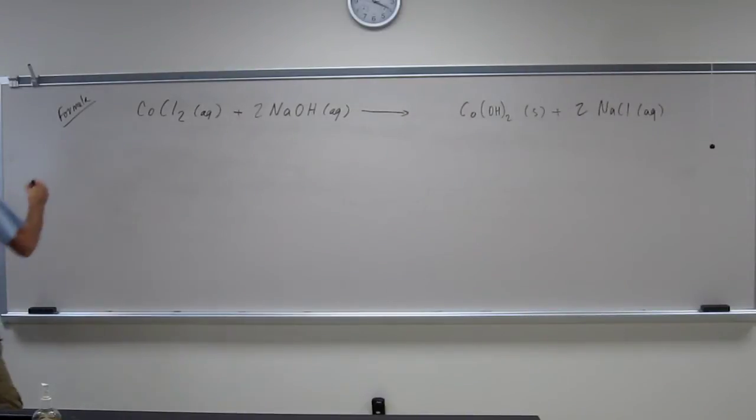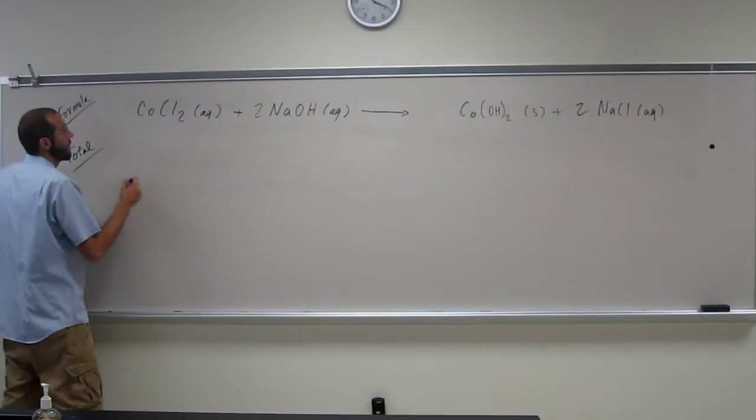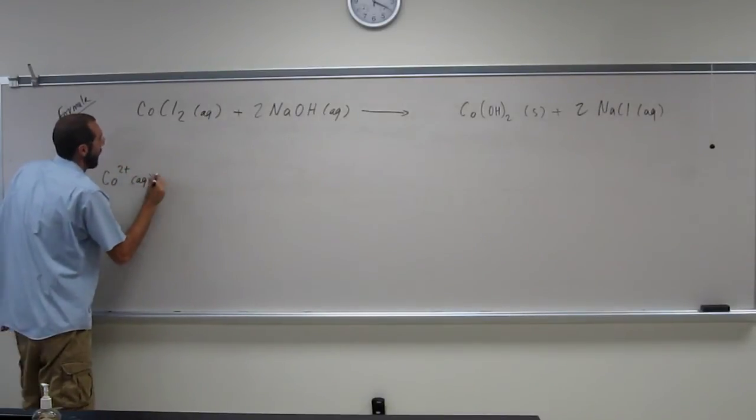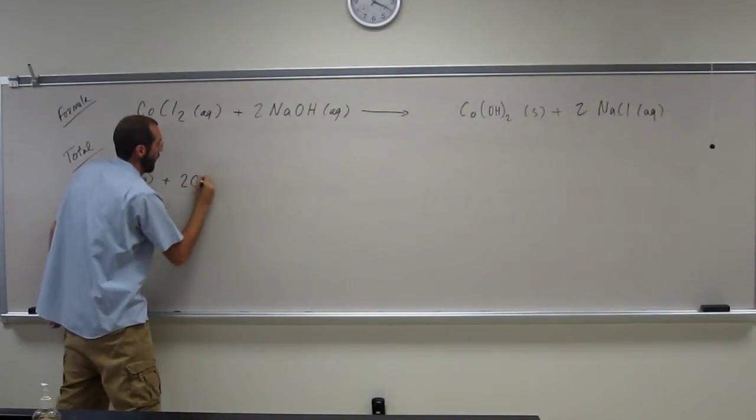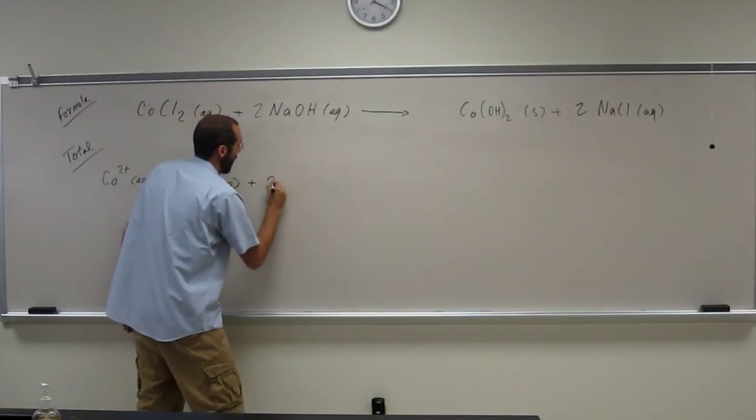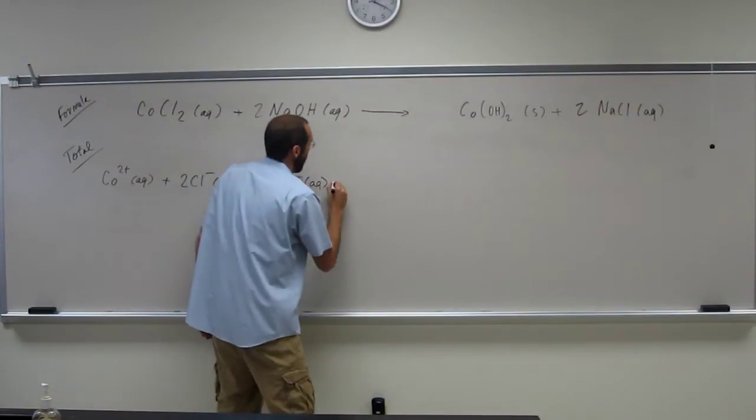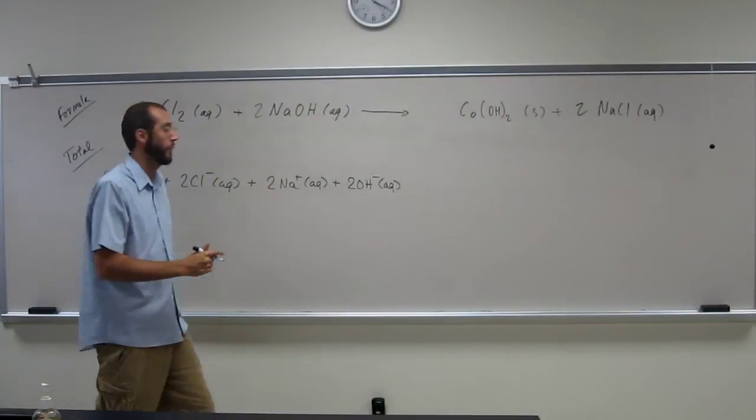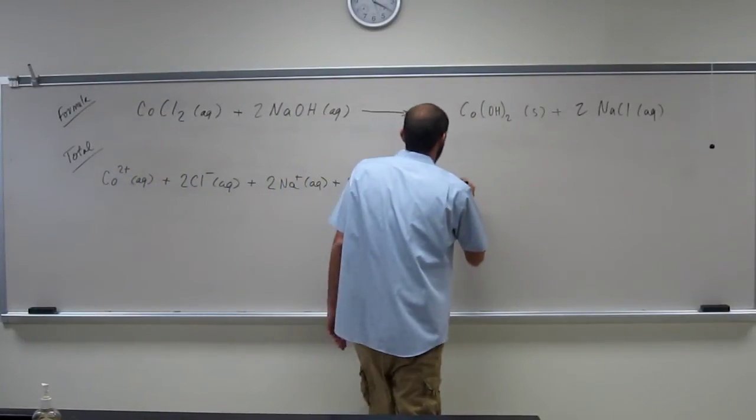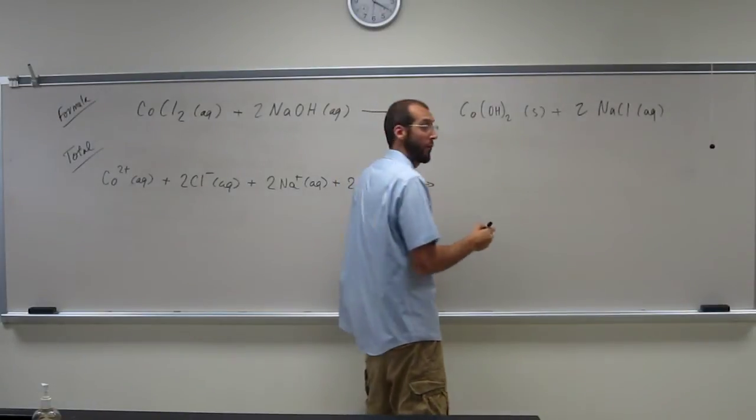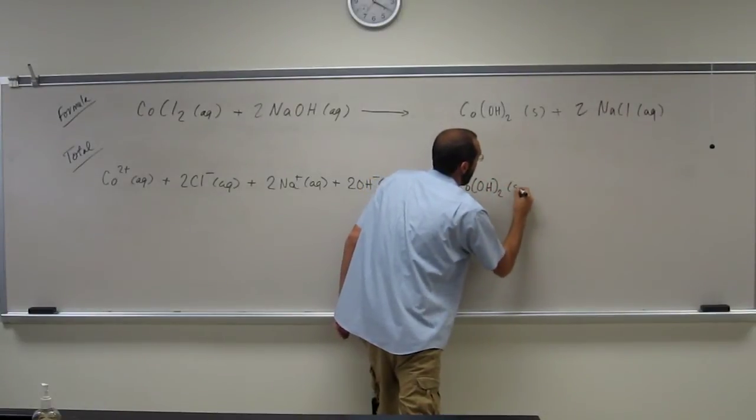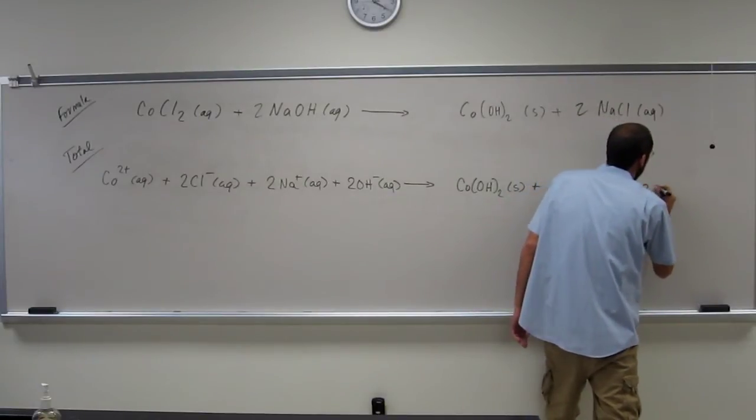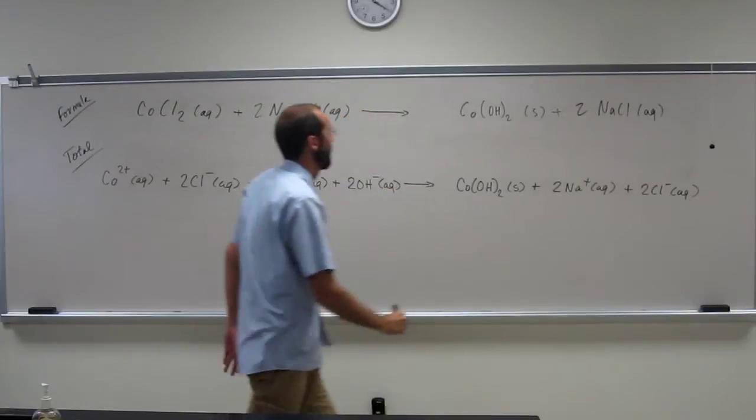Okay, so the next thing we've got to do is the what? The total ionic equation, right? So, anything that has aqueous, break it up. Remember, two subscript goes in front. Remember, this two is talking about both the sodium and the hydroxide, of course. This thing stays as a precipitate together. Okay. Is everybody okay with that one? Yes.